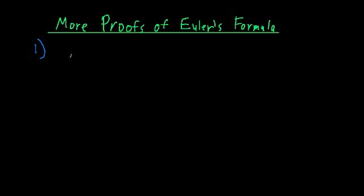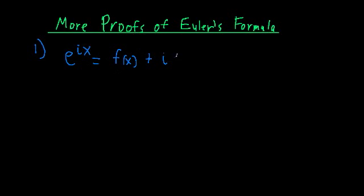For our first proof, we're going to start off with the function E raised to the I times X. This is a complex function, and we know that for the case of complex numbers, we can separate them into a real part and an imaginary part. So we're going to assume that we can separate this complex function into two parts: a real function denoted F of X, and an imaginary function I times G of X. We don't know what F of X and G of X are, but in the course of this proof, we're hopefully going to find out.